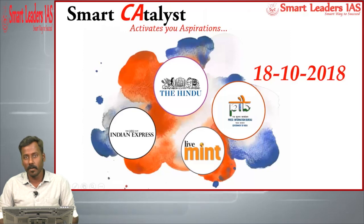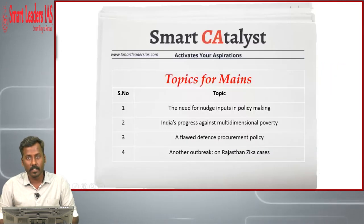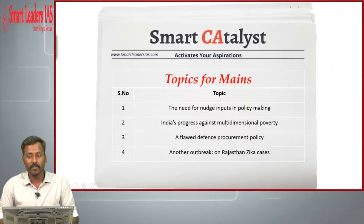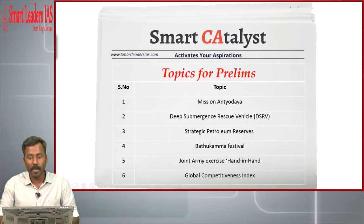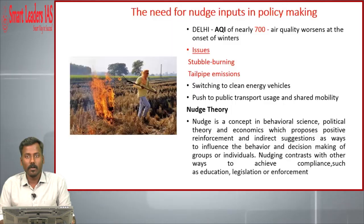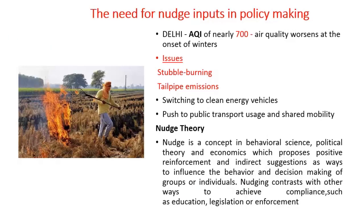Welcome to Smart Catalyst. Today we will be discussing 10 topics, of them 4 are relevant with mains and 6 topics are relevant with prelims. The first topic is related with ways and means to cut down pollution in India. This article discusses how inputs from nudge theory would be helpful in cutting down the fallacies of policy making in India.